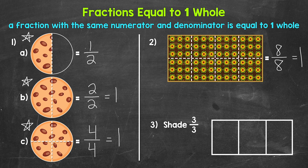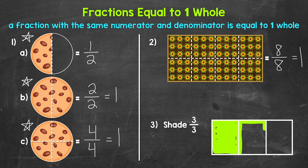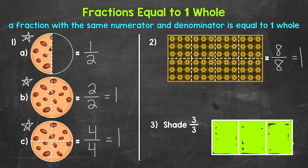Lastly, for number three, we need to shade three thirds: one third, two thirds, and three thirds. Three out of three parts are shaded — one whole rectangle is shaded. We have the same numerator and denominator, so this is just another visual of a fraction equal to one whole. If a fraction has the same numerator and denominator, that fraction is equal to one.